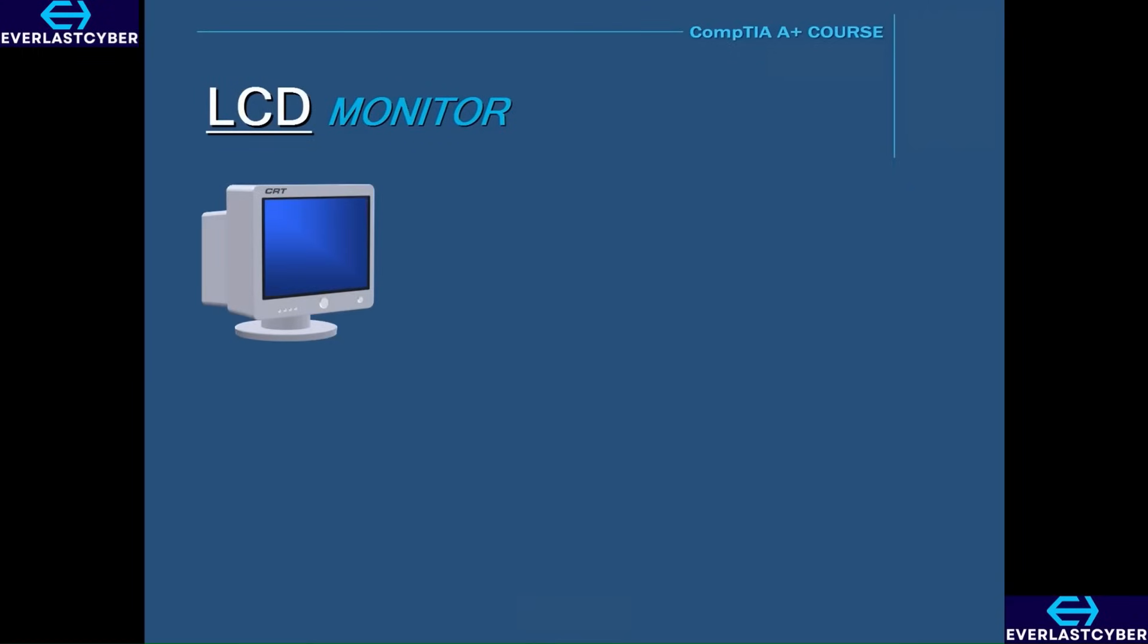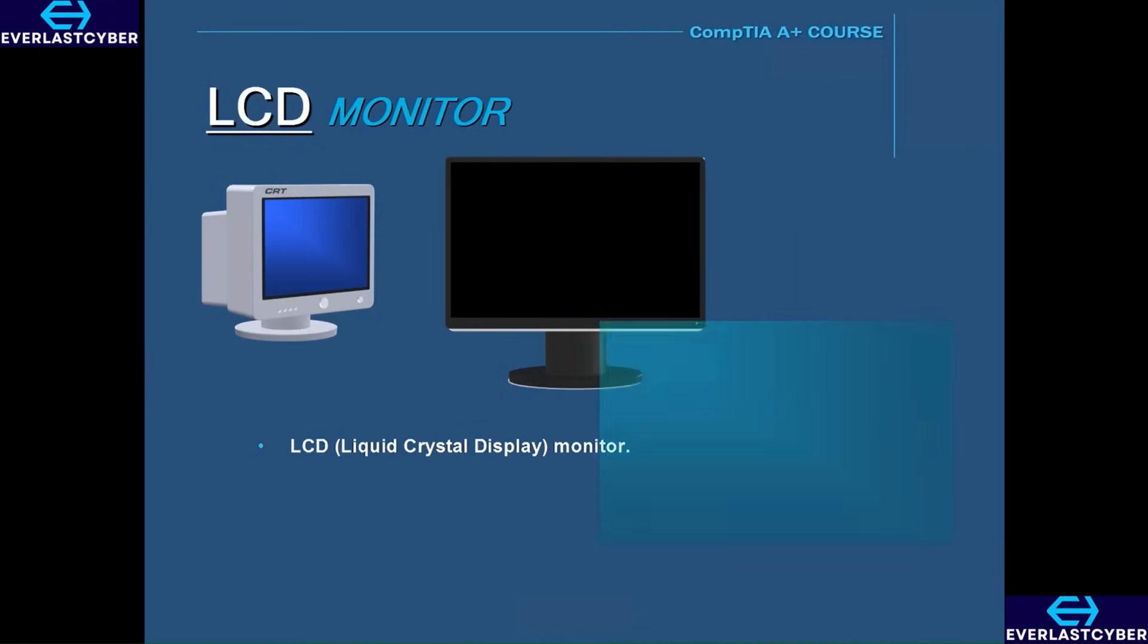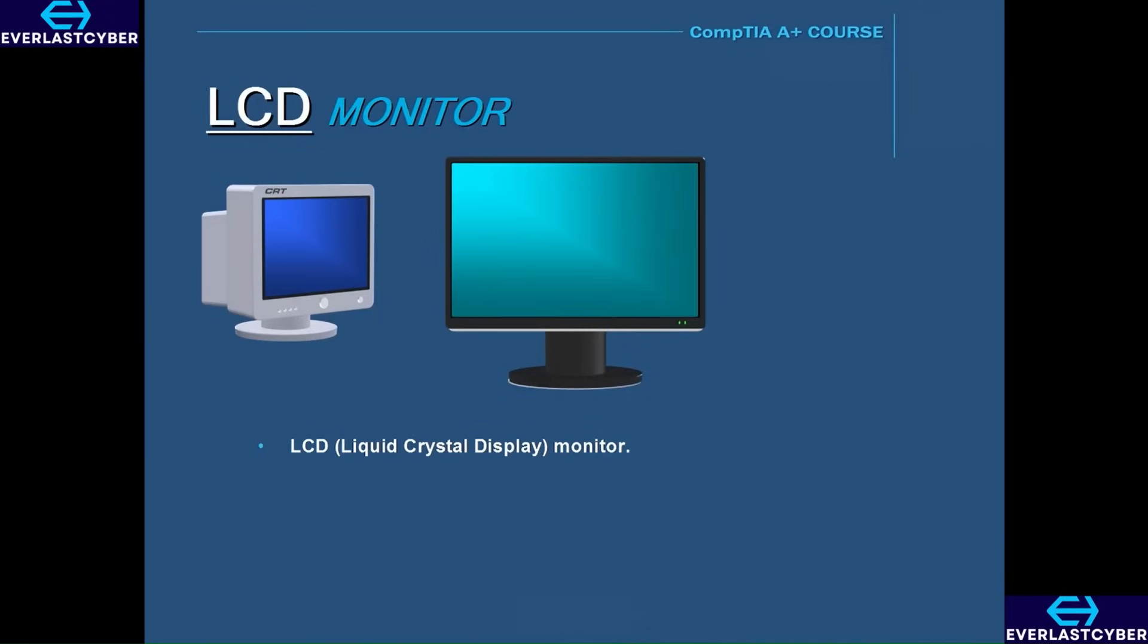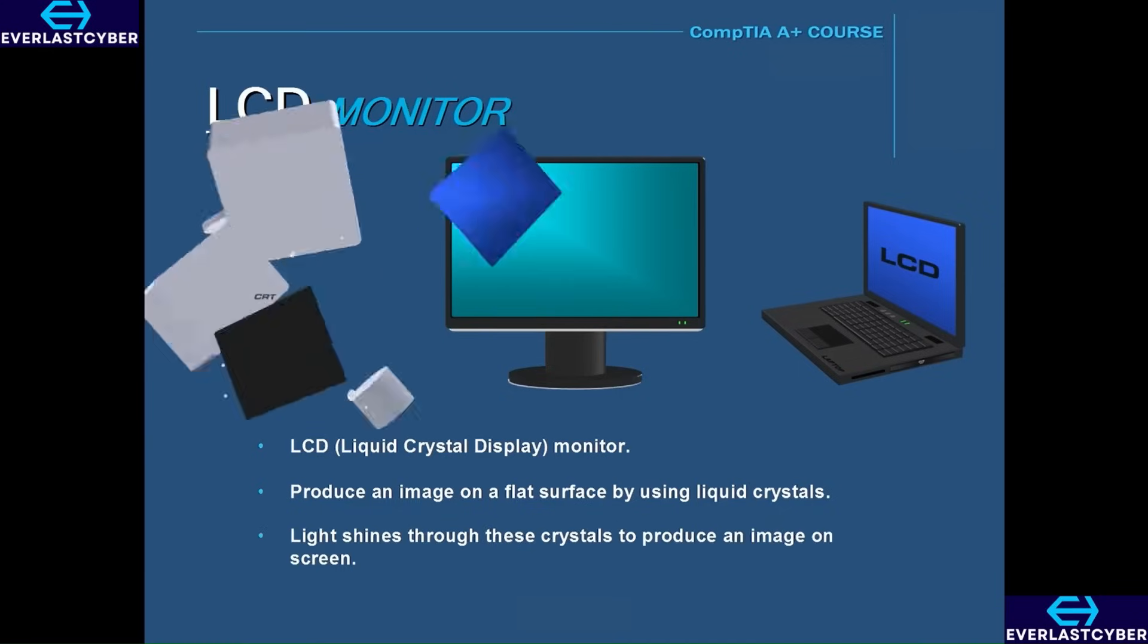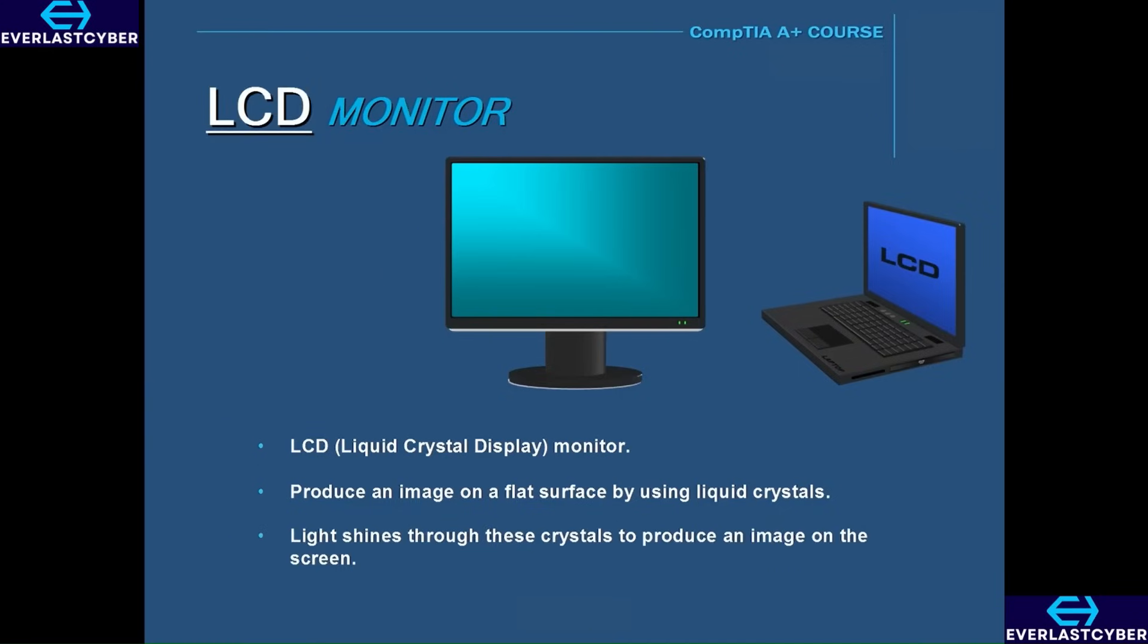Another type of monitor is LCD, which stands for liquid crystal display. LCD monitors produce an image on a flat surface by using liquid crystals. Light shines through these crystals to produce an image on the screen, and it uses filters to produce different colors. LCDs were first used in laptop computers and have now made their way to the desktop marketplace and have completely replaced CRT monitors.